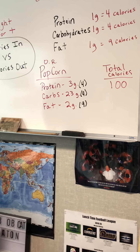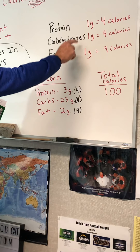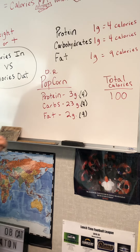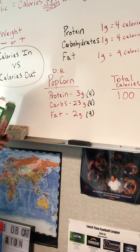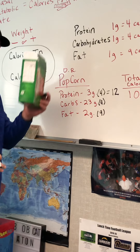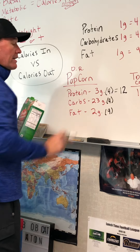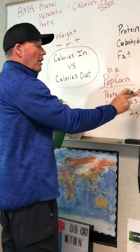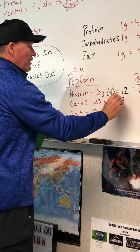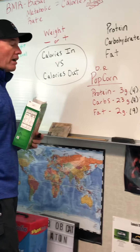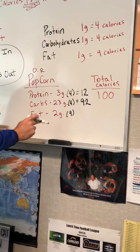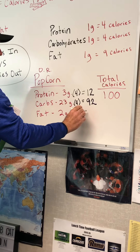To determine how many calories, we're going to use our chart. We know that protein has four calories per gram, and there are three grams of protein — so three times four is 12. There are 12 calories just from the protein in this popcorn. There are 23 grams of carbohydrates, and four calories per gram, so 23 times four equals 92. Then there are two grams of fat, and nine calories per gram, so two times nine gives us 18.